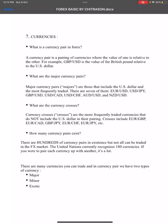Hello everyone. In this video we are going to discuss currency pairs in forex. What is a currency pair? In forex, we have major currency, cross currency, and minor currency. A currency pair is a pair of currencies where the value of one is relative to the other. For example, GBP/USD is the value of the British pound relative to the US dollar.